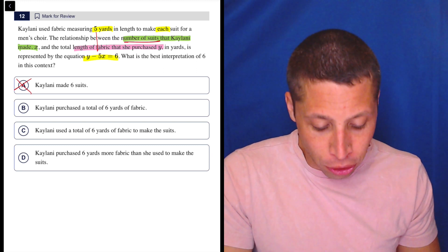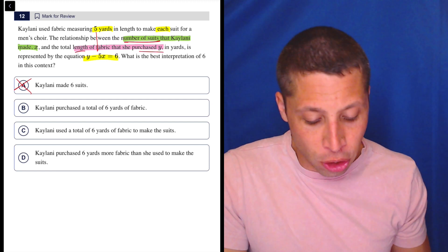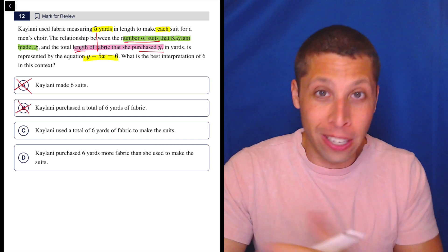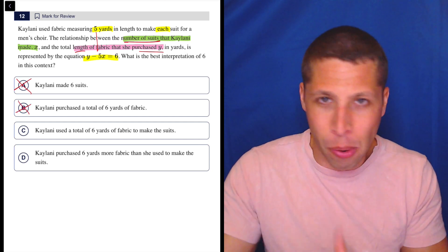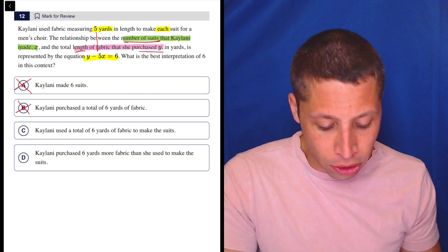B: Kalani purchased a total of six yards of fabric. Well again, the length of fabric that she purchased is y. So no, she purchased y yards of fabric. It's okay that it's an unknown, that's the point. We don't know those things.